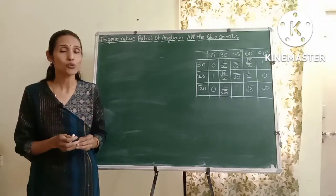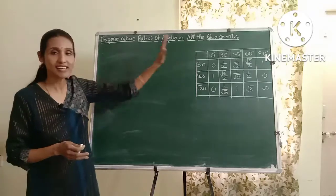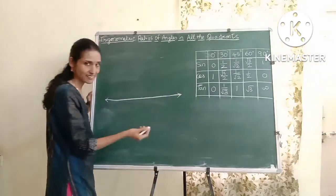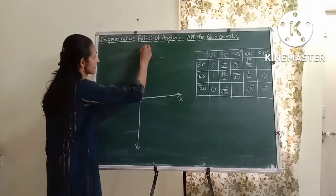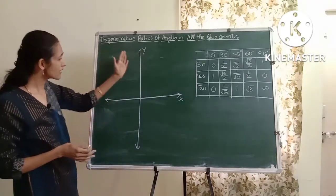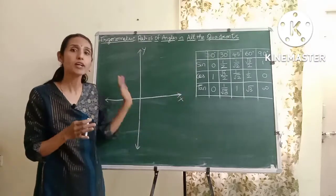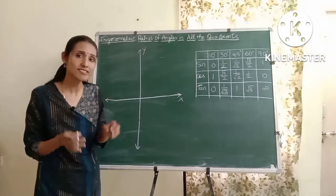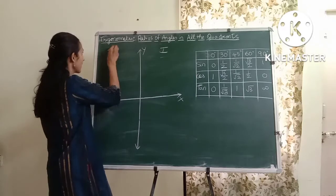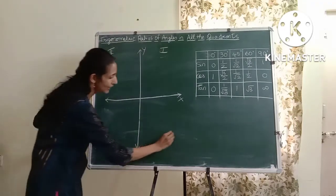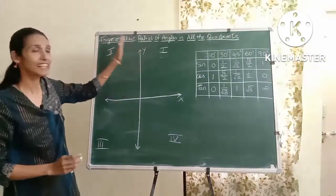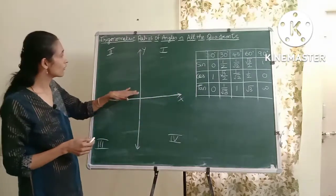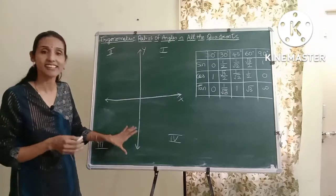For that, first let's introduce the two coordinate axes. In a 2D plane there is a horizontal line called the x-axis and a vertical line called the y-axis. These two axes divide the entire plane into four regions or four quadrants. For the x-axis, this is the positive side and the negative side, and for the y-axis, here is the positive side and this is the negative side.